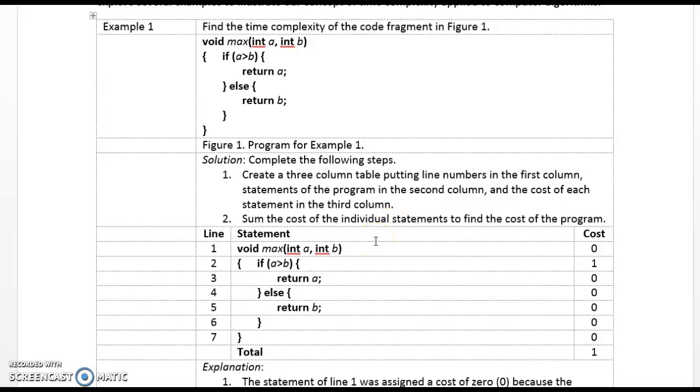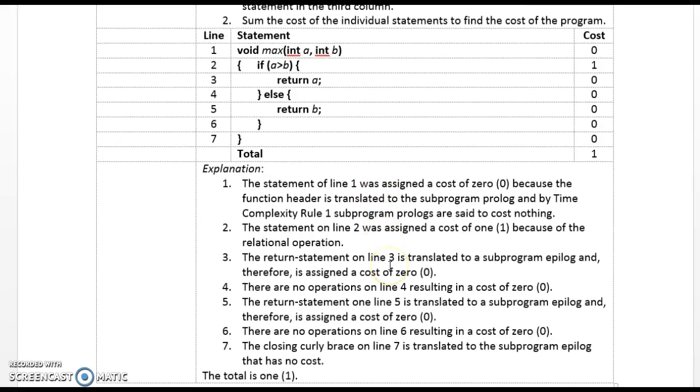Example 1. Find the time complexity of the code fragment in figure 1. What we have is a function max, and if a is greater than b, we return a, else we return b. So we use our three-column mechanism here with line, code, and cost. We have a cost of 1, which is the comparison for a greater than b on line 2. There's no cost for a program epilogue on lines 3 and 5 where we return, and no cost elsewhere as well.